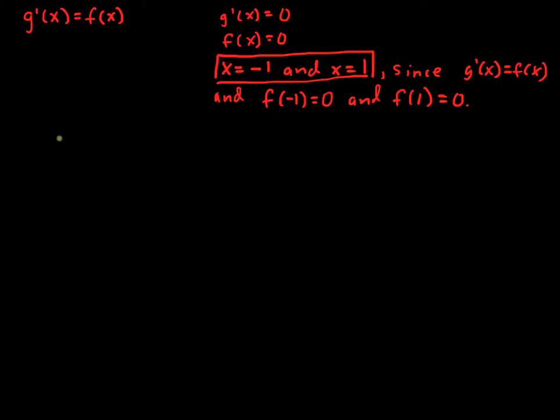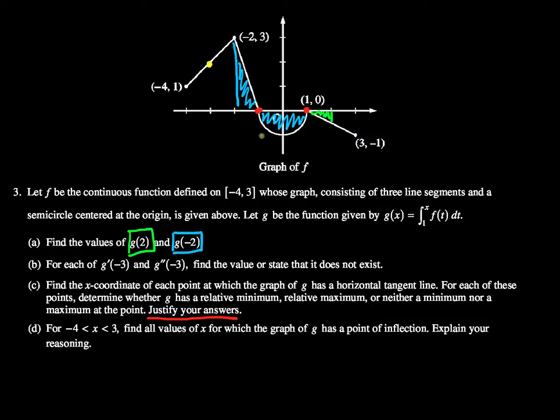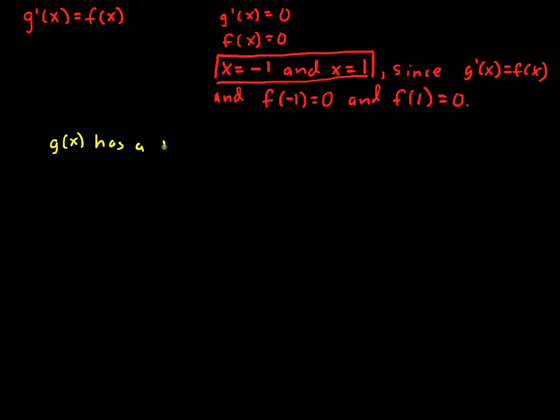Okay, so we'll say g of x has - did I say minimum? I meant maximum. If I said minimum, I was wrong. Maximum, sorry. g of x has a relative maximum at x equals negative 1 since